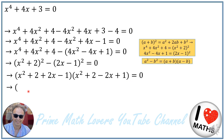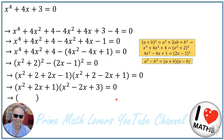After simplifying, I'll have (x squared plus 2x plus 1) times (x squared minus 2x plus 3) is equal to 0. The first factor is a perfect square and represents (x plus 1) to the power of 2, so the equation becomes (x plus 1) to the power of 2 times (x squared minus 2x plus 3) is equal to 0.